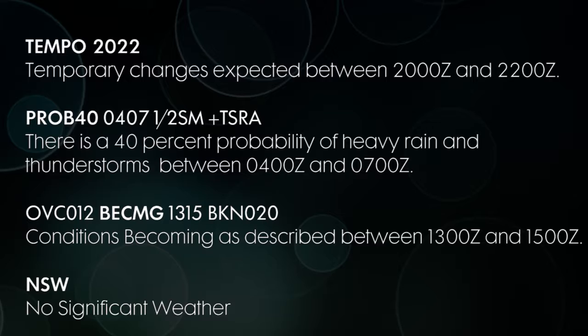You might also see BECMG, which stands for 'becoming,' and it applies between specified hours. For example, the wind will come from a different direction, so they'll note that as becoming. You might also see NSW, which stands for no significant weather, though that's very rare to see.